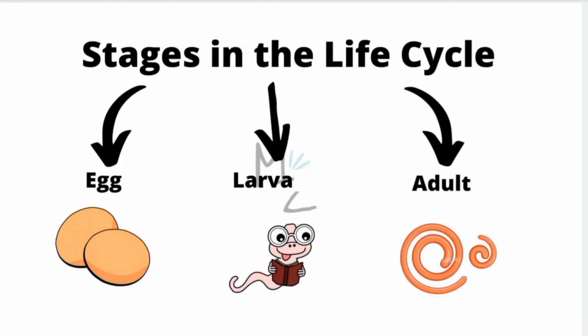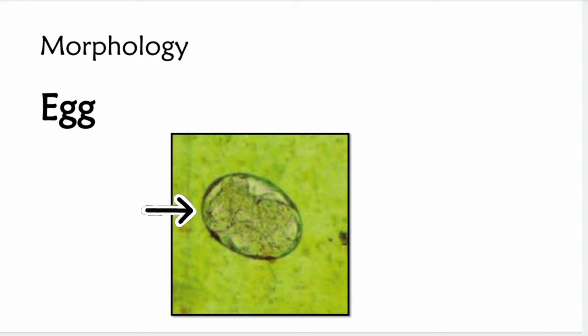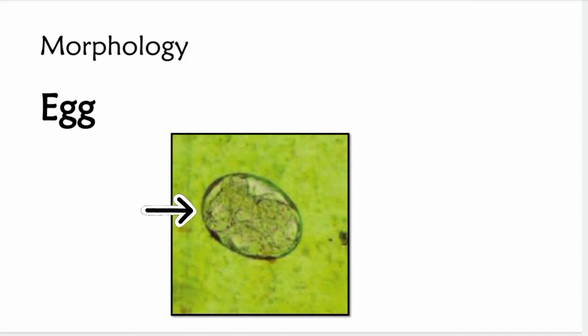Before starting the morphology, there are certain stages that exist in the life cycle of Strongyloides stercoralis. First is the egg, second is the larva, and third is the adult worm. The egg's shape is ellipsoid, and its size varies from 40 to 85 micrometers in length. These eggs are dark in color, and every egg contains a larva within a thin wall. As shown in the picture, you can see the ellipsoid-shaped egg with a larva inside and a thin wall.